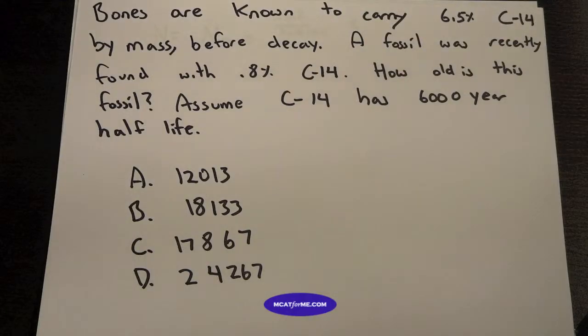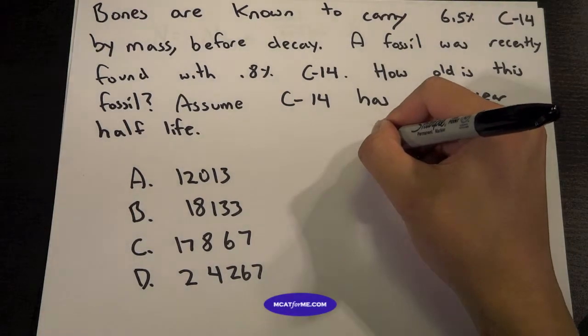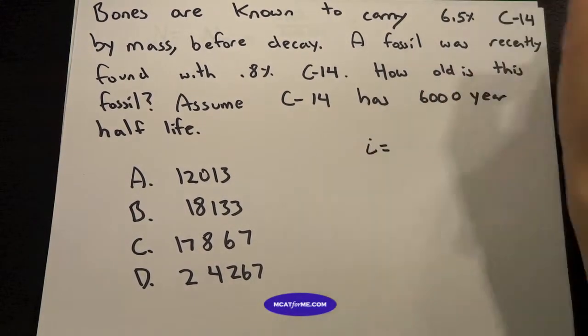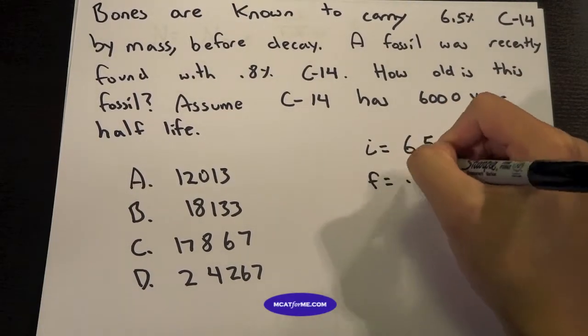So the first thing we want to do when we're dealing with this type of very wordy question is find out what we know and what we need to know. So we know that the initial is 6.5, and the final is 0.8.